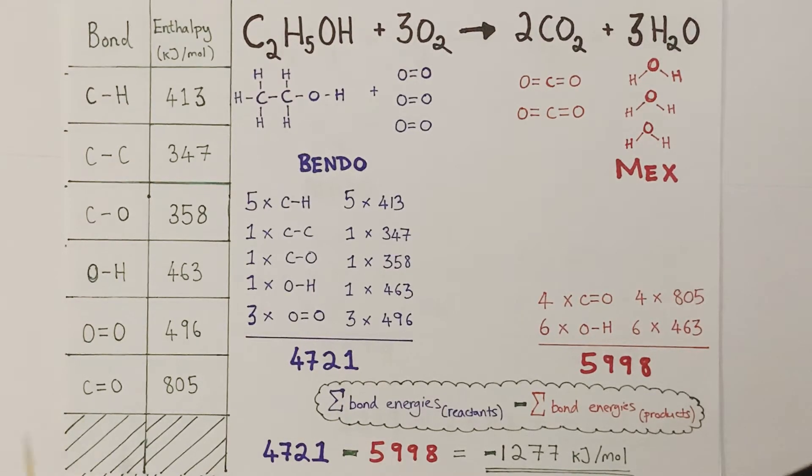Generally in questions, you're presented with a table of information like this, which contains the bond and also the bond enthalpy associated with that bond. You'll also be given a question which contains an equation for a reaction taking place, a balanced equation. And your job will usually be to find the enthalpy change per mole for that particular reaction.